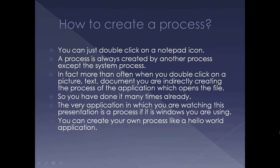Now, how do you create a process? It's very simple and you've probably already done it. You can just double-click on a Notepad icon or any program's icon. A process is almost always created by another process. For example, when you double-click on Notepad, the Notepad.exe process is created by Explorer.exe, which handles that double-click. So Explorer — the shell itself — creates Notepad. In fact, more often than not, when you double-click on a picture, text document, or anything like that, you are indirectly creating a process of the application that opens that file.